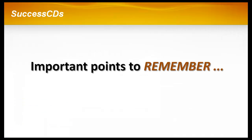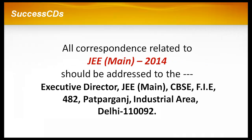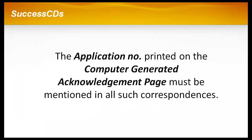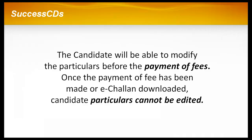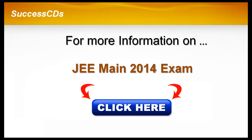Here are some important points a candidate should remember. All correspondence related to JEE Main 2014 should be addressed to the Executive Director, JEE Main CBSE FIE, 482, Patparganj Industrial Area, Delhi - 110092. The application number printed on the computer-generated acknowledgement page must be mentioned in all correspondences, so it is essential to note it down. The candidate will be able to modify particulars before payment of fees. Once the fee has been paid or e-challan downloaded, candidate particulars cannot be edited. For more information on JEE Main 2014, please click on the link given on the screen.